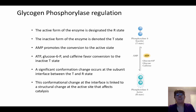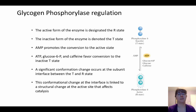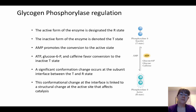ATP, glucose-6-phosphate, and caffeine favor conversion to the inactive T form. With glycogen phosphorylase regulation, there are a lot of molecules that can cause inhibition as well as a number that are allosteric effectors. The conversion between the T state and the R state is fairly significant — it's a large conformational change — and that conformational change is linked to the active sites that affect catalysis.